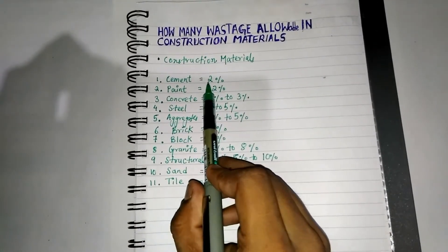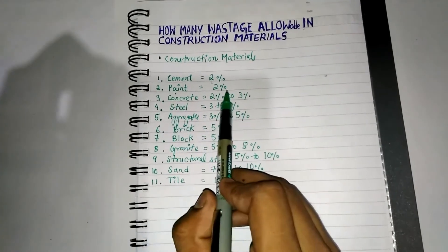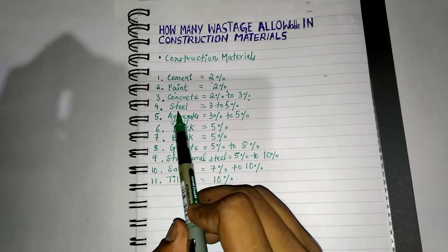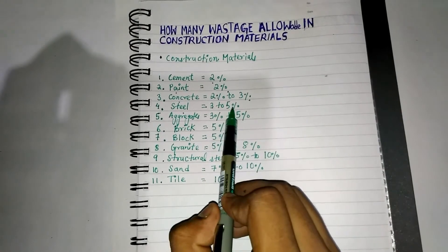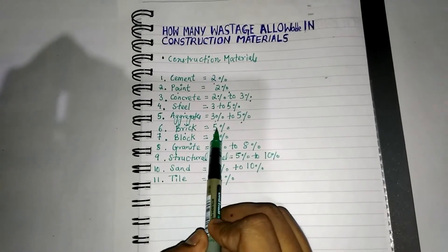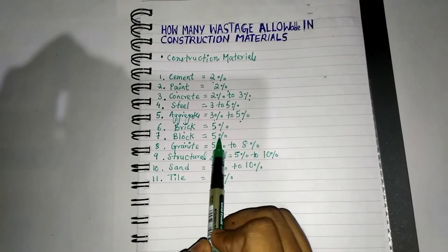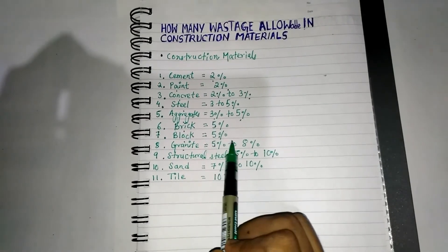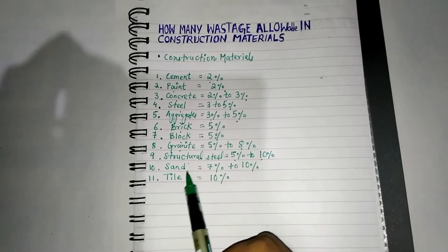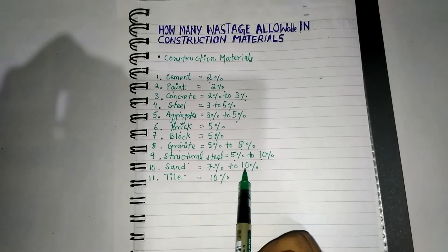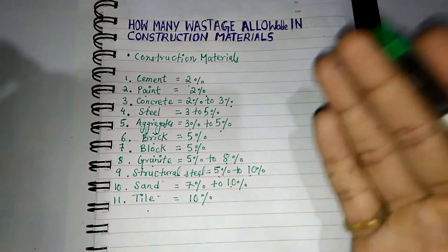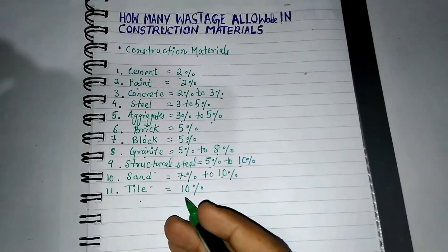To summarize, the allowable wastage percentages are: Cement 2%, Paint 2%, Concrete 2–3%, Steel 3–5%, Aggregate 3–5%, Brick 5%, Block 5%, Granite 5–8%, Structural Steel 5–10%, Sand 7–10%, and Tiles 10%. These are the wastage allowances for all these construction materials.